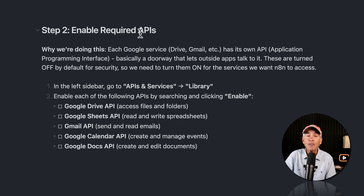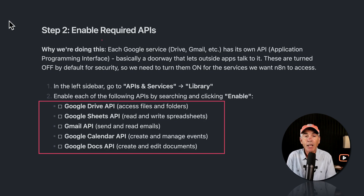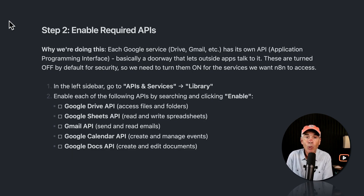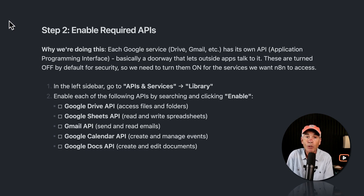Step two: we need to enable the APIs for each of the Google services we're going to be using in N8N — Drive, Docs, Gmail, Calendar, et cetera. They all have their own API, or application programming interface. This is basically a doorway that allows it to talk to external applications. By default, to keep things secure, the doors or APIs are closed. So we're going to enable or open the doors for the APIs for each Google service we want to use, so that N8N is going to be able to talk to those services.